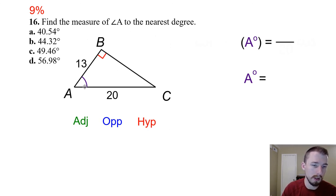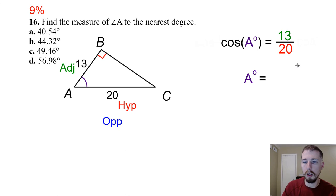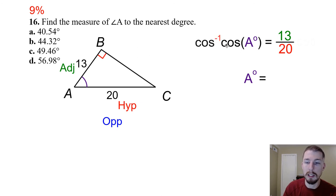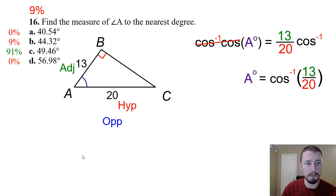Number sixteen — find the measure of angle A to the nearest degree. They give the adjacent leg and the hypotenuse, so we use cosine: cos A = 13 / 20. To solve for A, apply inverse cosine to both sides: A = cos⁻¹(13/20). Put that in the calculator: A ≈ 49.46°, so approximately 49°.